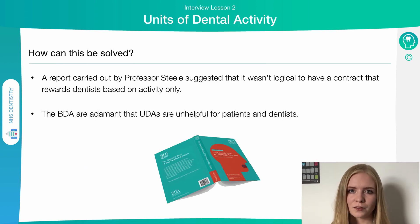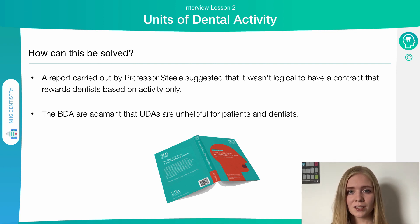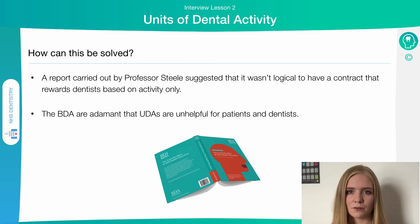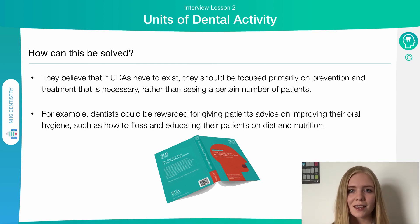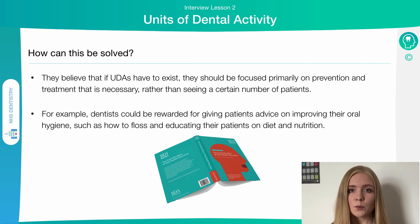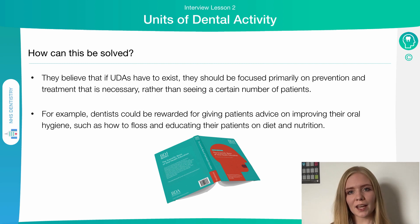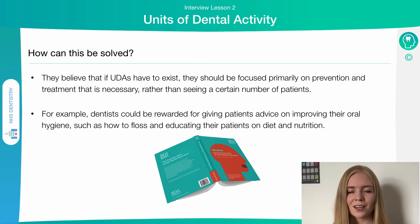What are the potential ways this could be solved? A report found that it wasn't really logical to have a contract set up in this way. The British Dental Association have also said that it's quite unhelpful to have UDAs as a measurement of dental activity for NHS treatment provision, from both the dentist and the patient's perspective. They believe that instead of UDAs, there should be rewards based on the treatment given to patients that is necessary, as opposed to the number of patients and treatments provided overall. This would involve rewarding dentists for things such as oral hygiene advice and how to floss properly — educating patients and therefore preventing further problems, rather than just rewarding the amount of treatments actually performed, since it's more important to prevent problems than simply treat them.